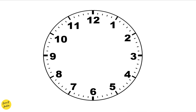A day consists of 24 hours, divided into two parts: a day lasting 12 hours and a night lasting 12 hours. By convention, 12 AM denotes midnight and 12 PM denotes noon. The first 12 hours denote AM and the remaining 12 hours denote PM. AM stands for ante-meridian, meaning before the sun has crossed the meridian line, and PM stands for post-meridian, meaning after the sun has crossed the meridian line. At 12 noon, the sun is at its highest point and directly over the meridian, so it is neither AM nor PM.